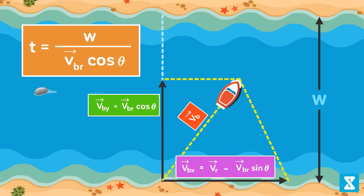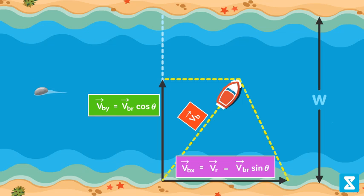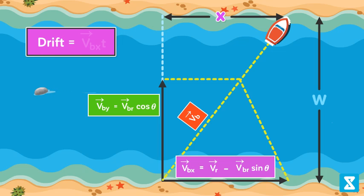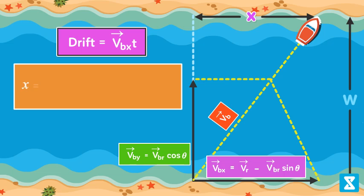VBR cos theta is the component of VBR perpendicular to river. In riverboat problems we also require to calculate drift, which is the displacement along the x-axis when the boat reaches the other bank of the river. Drift is equal to velocity of boat along x-axis times time taken to cross the river, which is x equal to VR minus VBR sin theta times W divided by VBR cos theta.